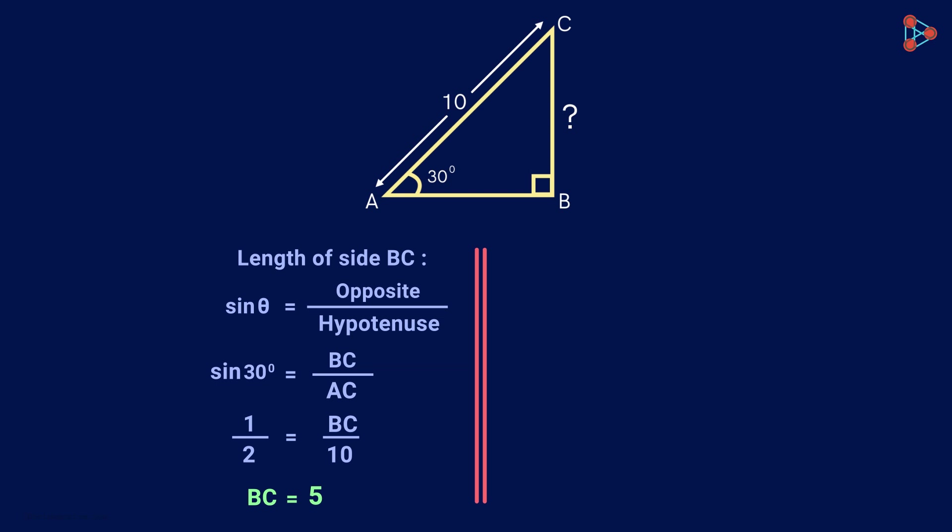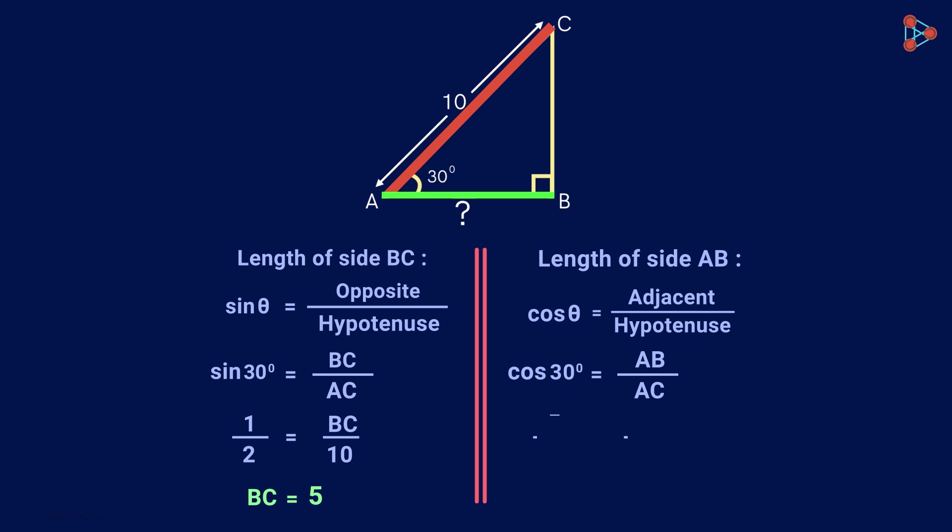Now what about the length of side AB? For this, we can use the cosine trigonometric function. For an angle theta, cos theta is equal to the adjacent side AB over the hypotenuse AC. Solving it further would give us the length of side AB easily.